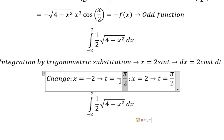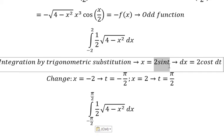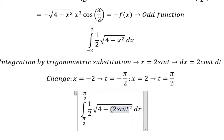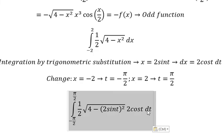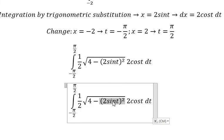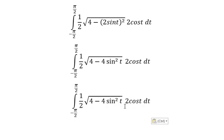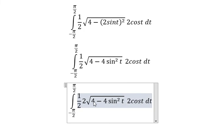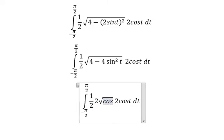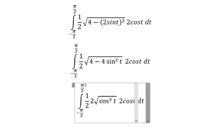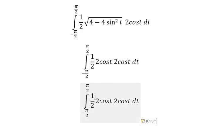We substitute everything in. We replace x with 2 sin(t) and dx with 2 cos(t) dt. Inside the square root we get 4 minus 4 sin²(t), which gives the square root of 4 times (1 minus sin²(t)). Since 1 minus sin²(t) equals cos²(t), the square root of 4 gives 2, and we get 2 cos(t).